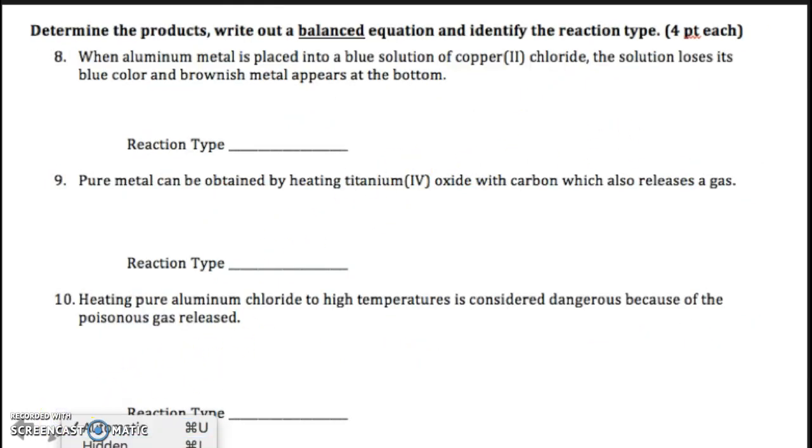Now for the last ones, you had to do a little bit more work here. Aluminum metal placed into a blue solution of copper 2 chloride. The solution loses its blue color, and brownish metal appears. So aluminum metal, well, that's just like before. Al as a solid plus a solution of copper 2 chloride. That 2 means that's the charge of copper. Chloride is the element chlorine. That's a minus. So that correct formula is CuCl2. It's not Cu2Cl. So that's all I gave you. Well, that's an element and a compound. So that's a single replacement. So what's replacing what? Well, aluminum is a metal. So it's going to switch places with the other metal, which is copper.